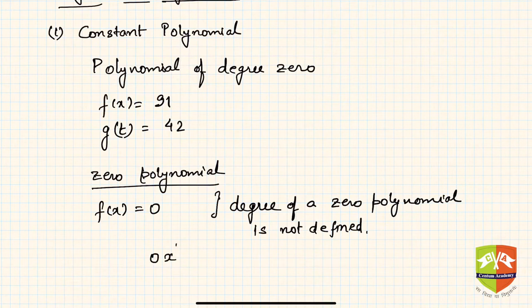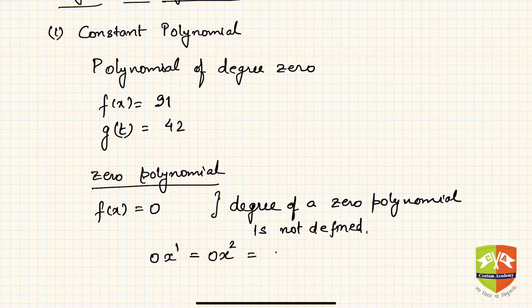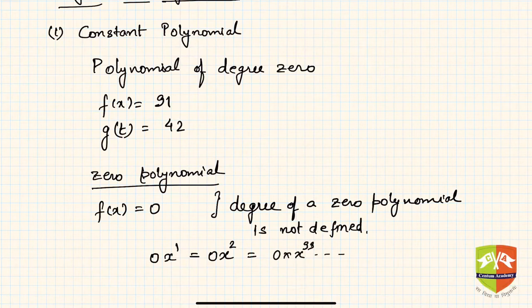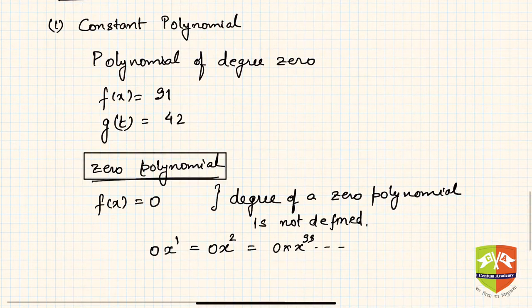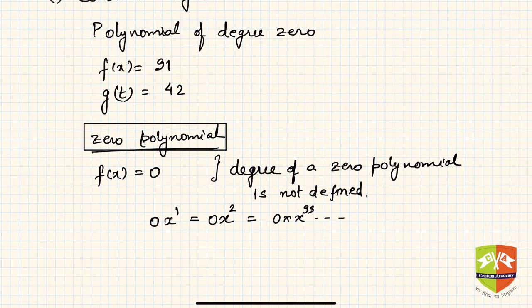The degree is not defined because zero can be written as 0·x¹, or 0·x², or 0·x⁹⁹ — it's very difficult to determine the degree. So please remember: the degree of the zero polynomial is not defined.